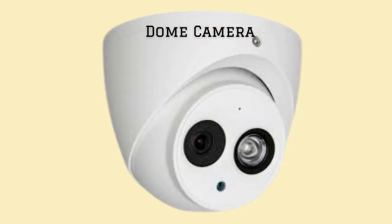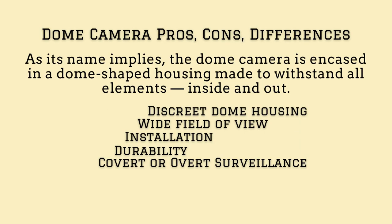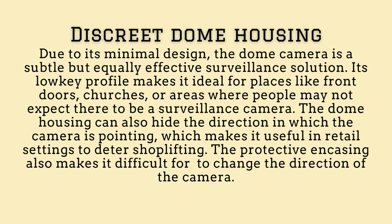Dome Camera Pros, Cons, and Differences: as its name implies, the dome camera is encased in a dome-shaped housing made to withstand all elements inside and out. Discreet Dome Housing: due to its minimal design, the dome camera is a subtle but equally effective surveillance solution. Its low-key profile makes it ideal for places like front doors, churches, or areas where people may not expect a surveillance camera. The dome housing can also hide the direction in which the camera is pointing, which makes it useful in retail settings to deter shoplifting. The protective encasing also makes it difficult to change the direction of the camera.